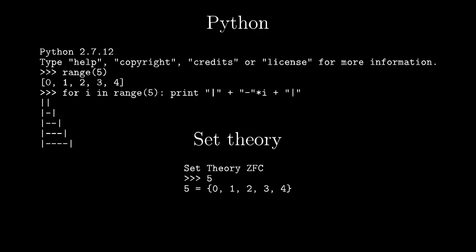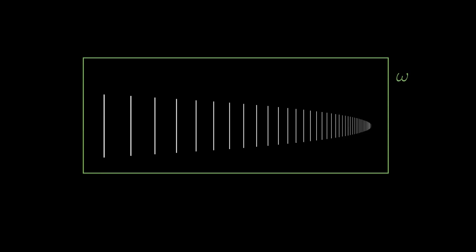Now let's go back to pure mathematics with infinities. The generalization of natural numbers to ordinal numbers is really straightforward. The ordinal omega is again the set of all the previous numbers, so it is the set of all the natural numbers.